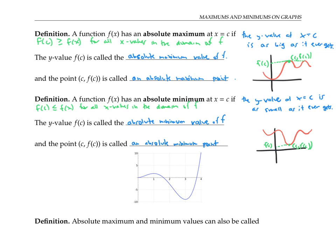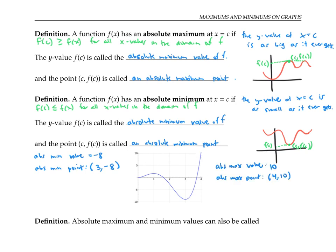For example, this function has an absolute minimum value of about negative eight, and it has an absolute minimum point with coordinates three, negative eight. If this function stops here and has domain from x values just from zero to four, then the function will have an absolute maximum value of 10 achieved at the point with coordinates four, 10. If however the function keeps going on forever, then it will have no absolute maximum value at all.